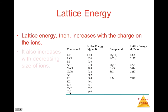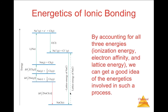Charges on the ions are the most powerful part, but if the ion charges are the same, the distance then makes the difference. By accounting for all three energies — ionization energy (energy to remove an electron), electron affinity (the energy released when something gains an electron), and the lattice energy — we can get a good idea of the energetics involved in such a process.